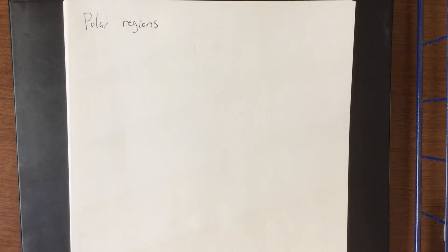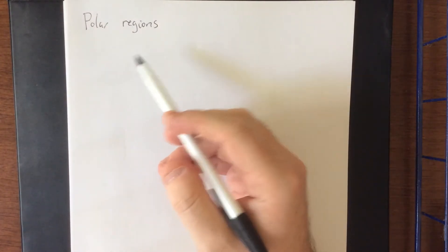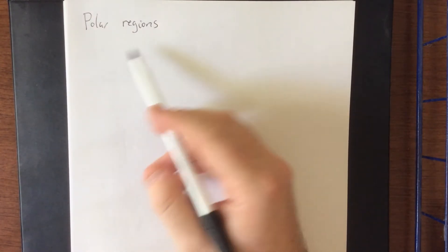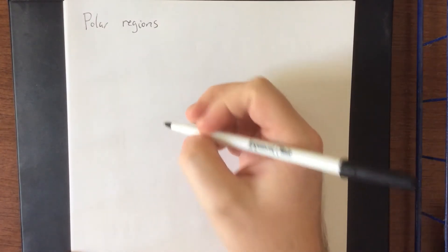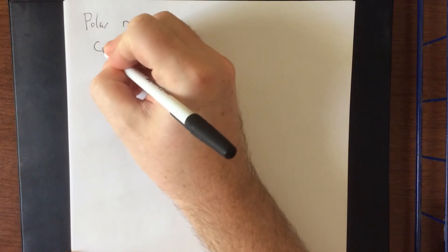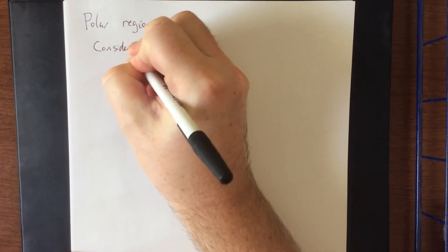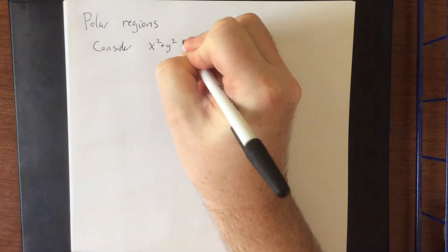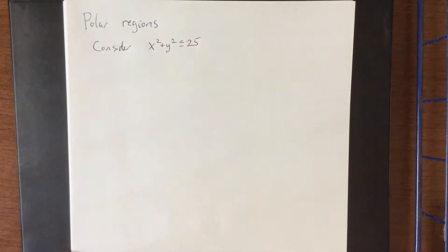Now, a great question to ask is, is there a situation where a region within the xy plane is neither type 1 nor type 2? Well, the answer is yes. I want to consider for a moment the region x squared plus y squared is less than or equal to 25.